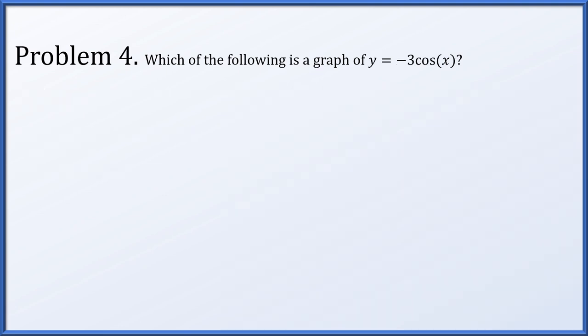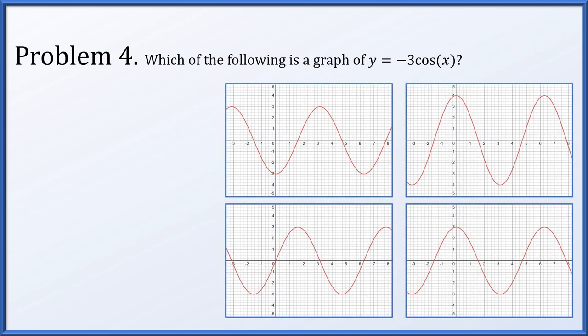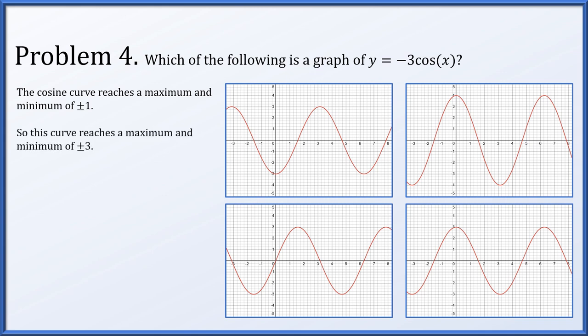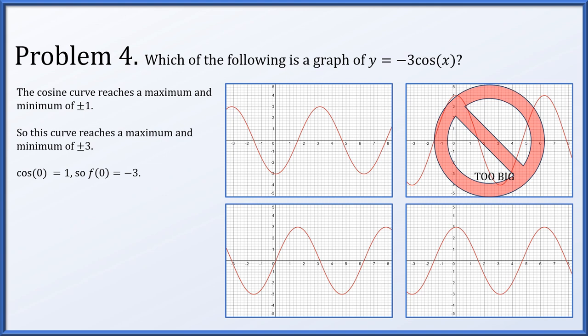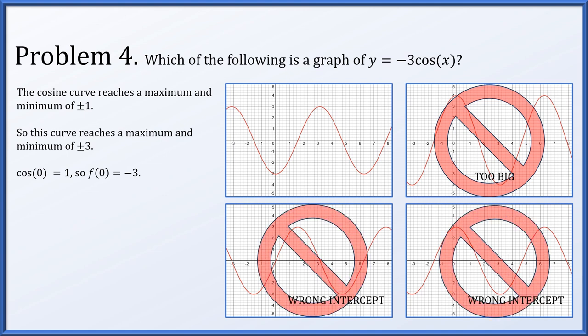In problem four, which of the following is a graph of y = -3cos(x)? We have four options. The cosine curve by default reaches a max and min of plus or minus one. This is being multiplied by minus three, so when the original cosine reaches its maximum of one, this reaches its minimum of minus three. And when the cosine curve reaches its minimum of minus one, this will reach its maximum of three. One curve goes up and down to plus or minus four — that's too big. The remaining curves go between plus or minus three. The cosine of zero is one, so f(0) = -3 times 1 = minus three. We're looking for an intercept of negative three. One option has an intercept of zero, another has an intercept of positive three — those can't be correct. The only remaining option is the one in the upper left.